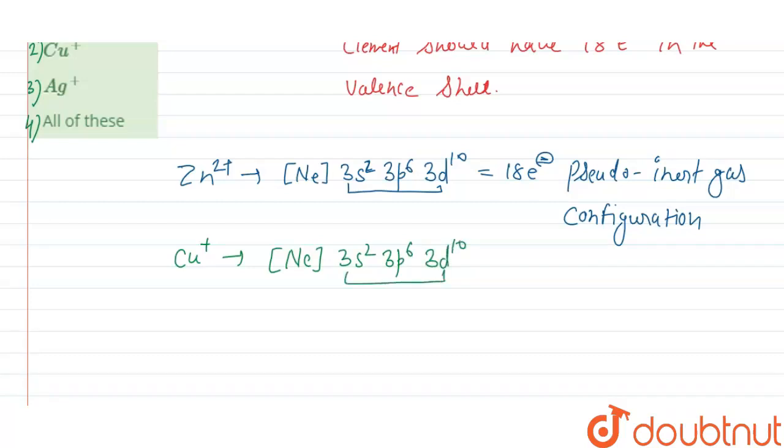So this also contains 18 electrons in the valence shell, so it also shows pseudo inert gas configuration.